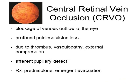Central retinal vein occlusion is blockage of venous outflow from the eye, causing profound painless vision loss. It is usually caused by thrombus, vasculopathy, or external compression. You will notice an afferent pupillary defect and decreased visual acuity. Fundoscopic visualization shows what is called thunder and lightning — small retinal hemorrhages — and optic disc edema. Treatment is prednisolone and emergent evacuation; these patients will usually need surgical management.